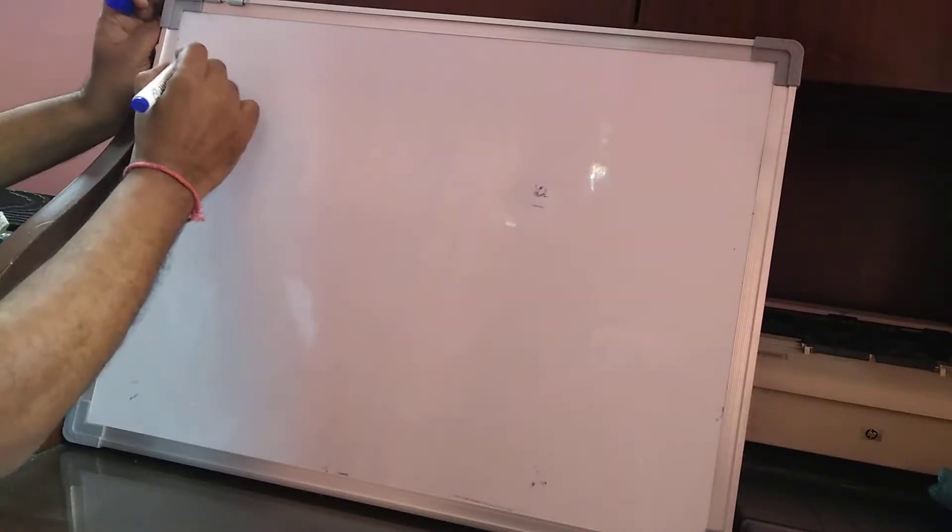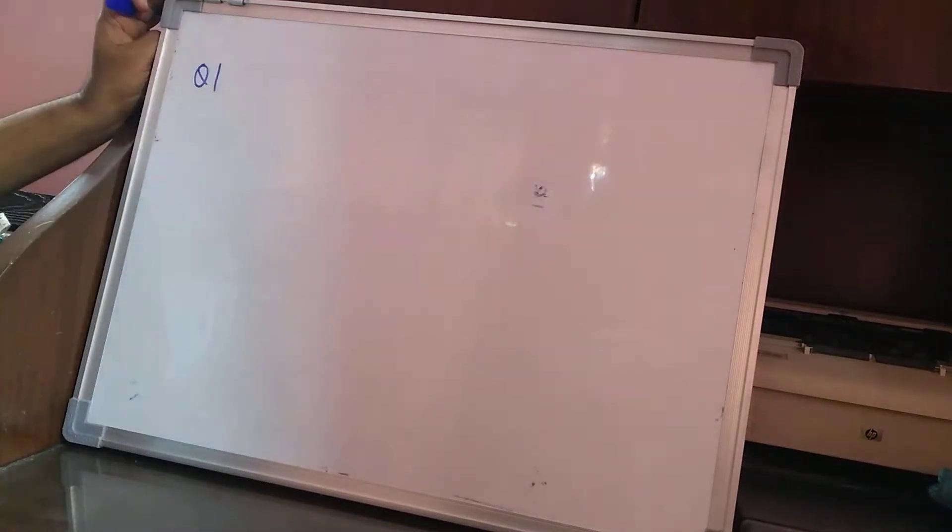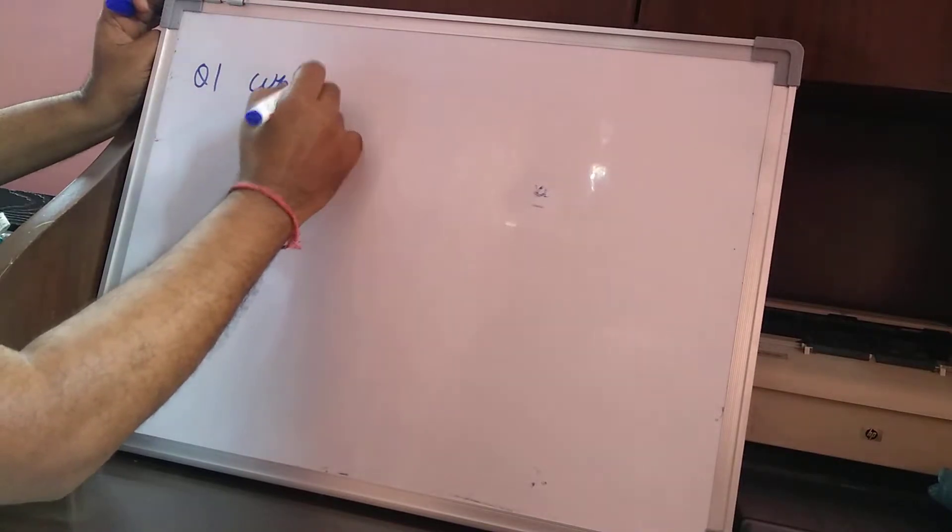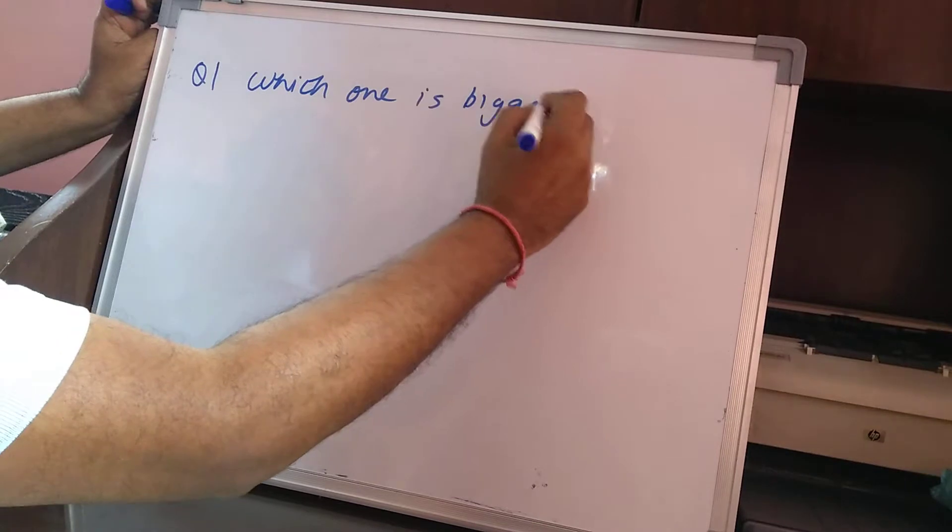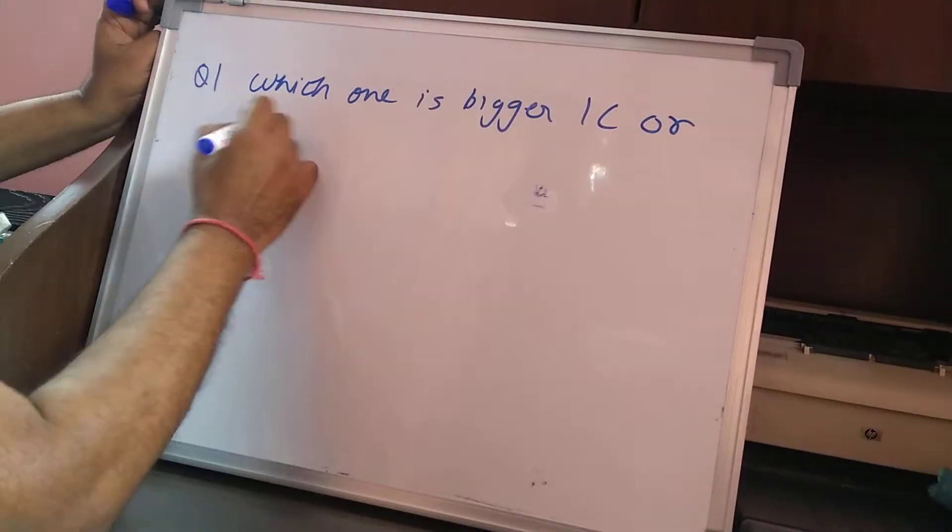Now let us understand one question based on the conservation of charge. Question number 1 here says that which one is bigger? 1 coulomb or charge on electron?